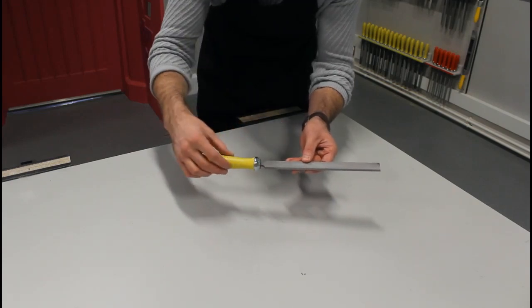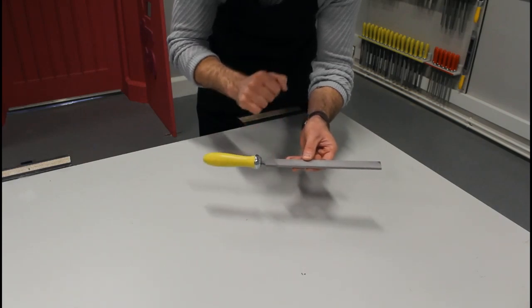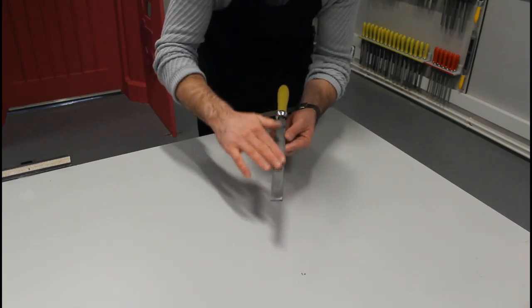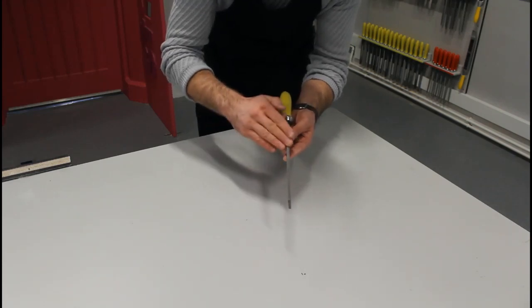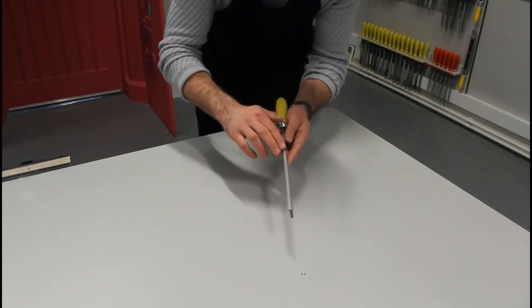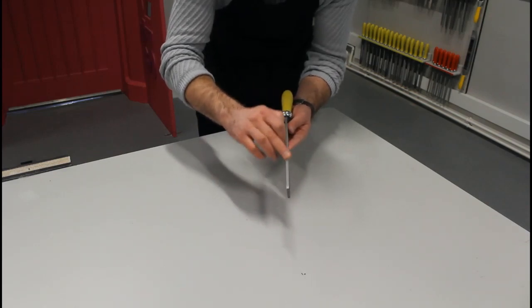The furl protects the handle from splitting when you're applying the file into the handle. The file then is made up of a cutting surface and a cutting edge. On the other edge of this flat file is smooth and this is known as a safe edge.